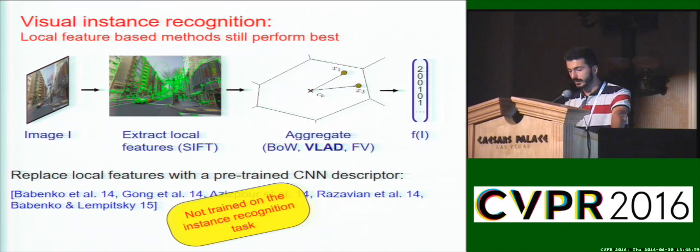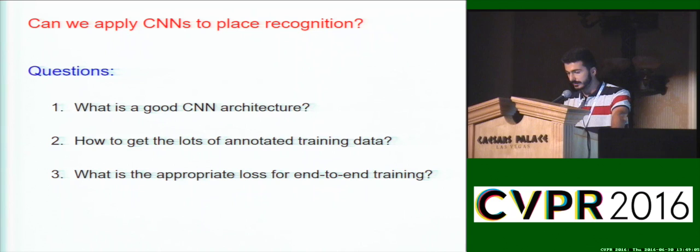In this work, we investigate how to apply CNNs for place recognition, and in order to do that, we have to address the following three challenges: What is a good CNN architecture? How to get lots of annotated training data? And how to train the system end-to-end, i.e. what is the appropriate loss?